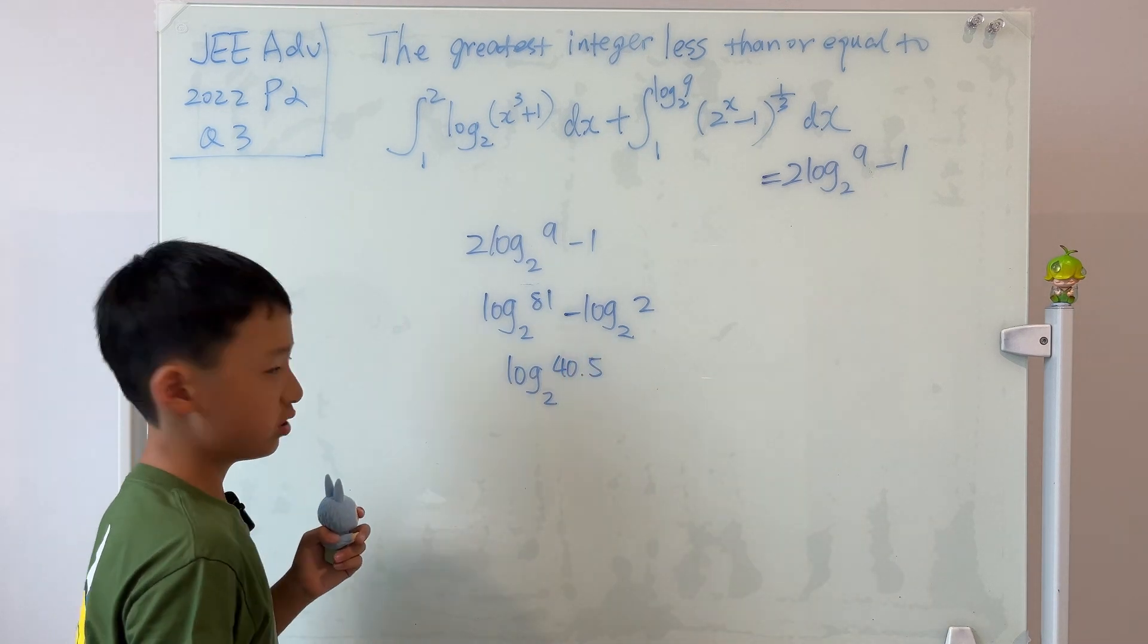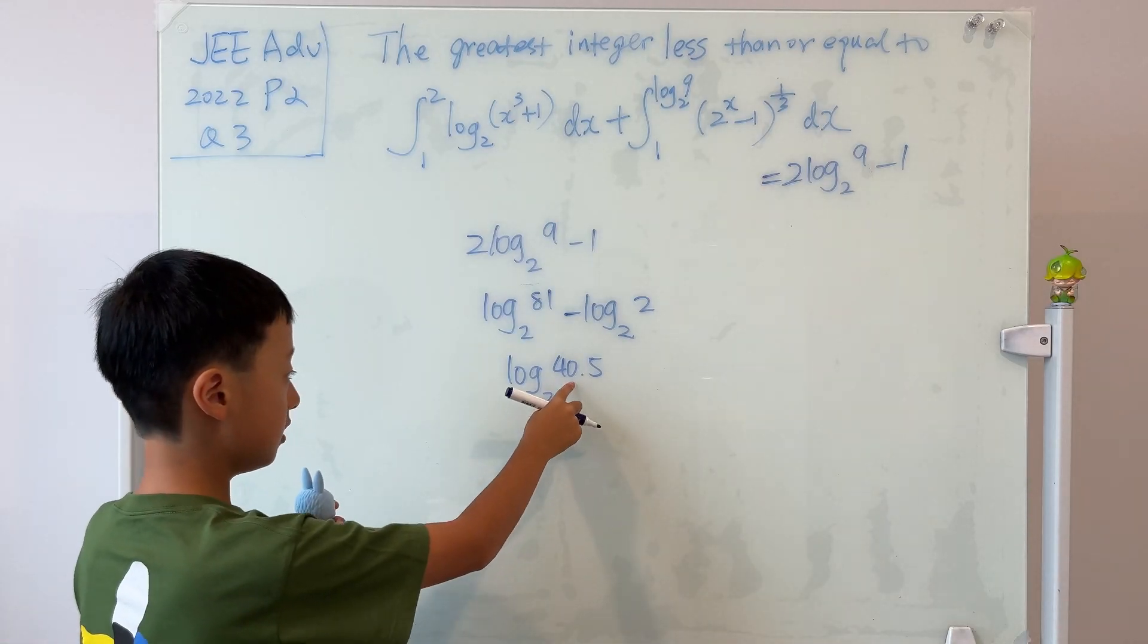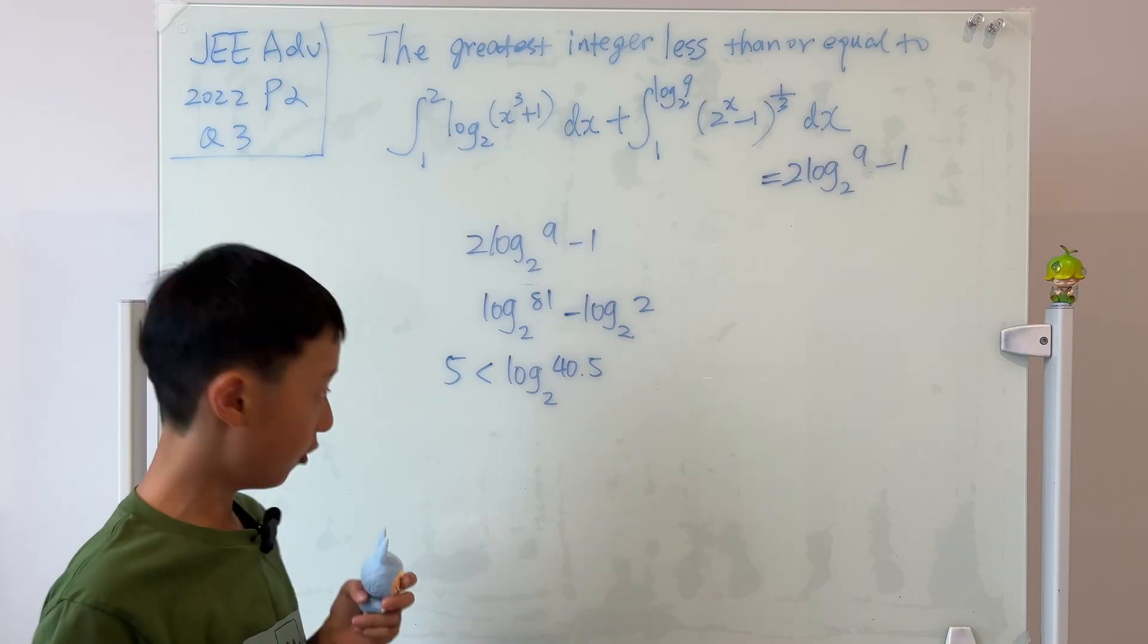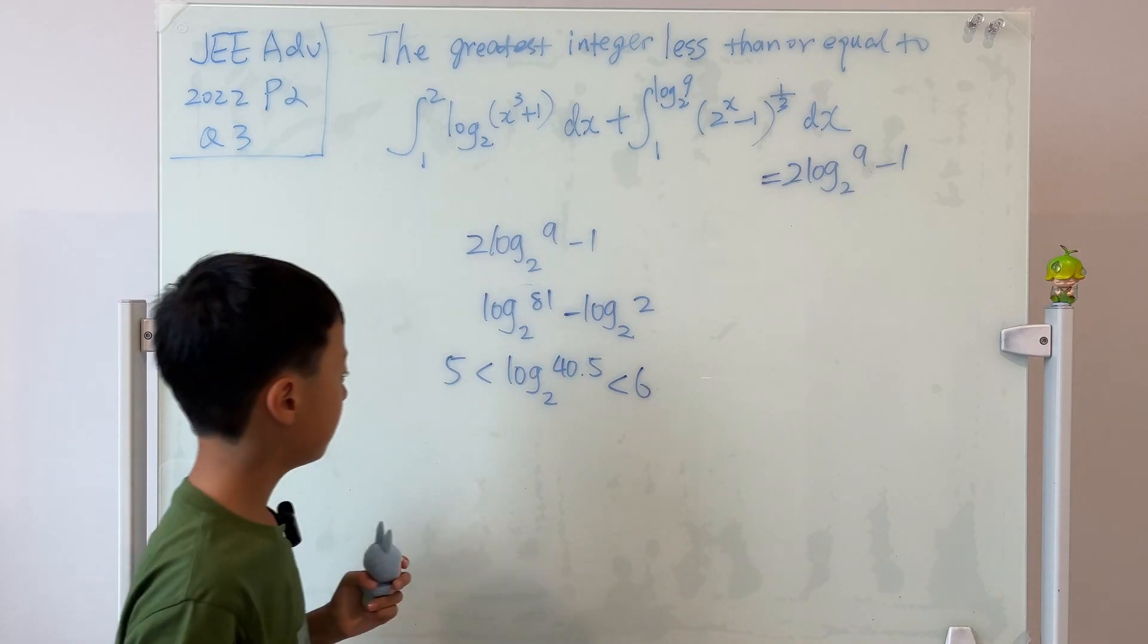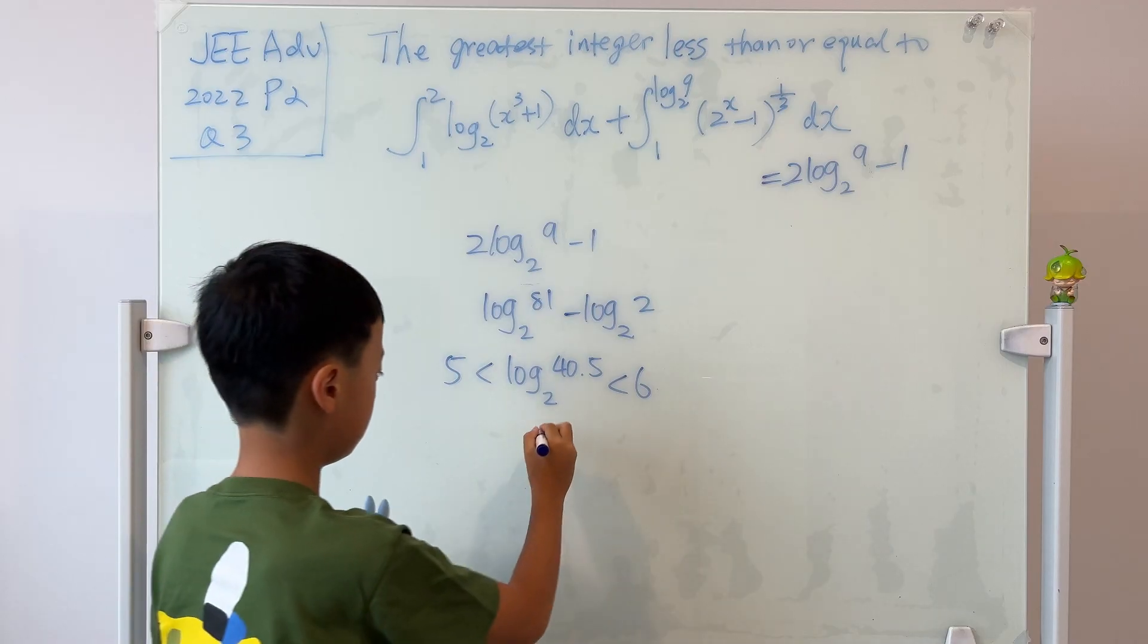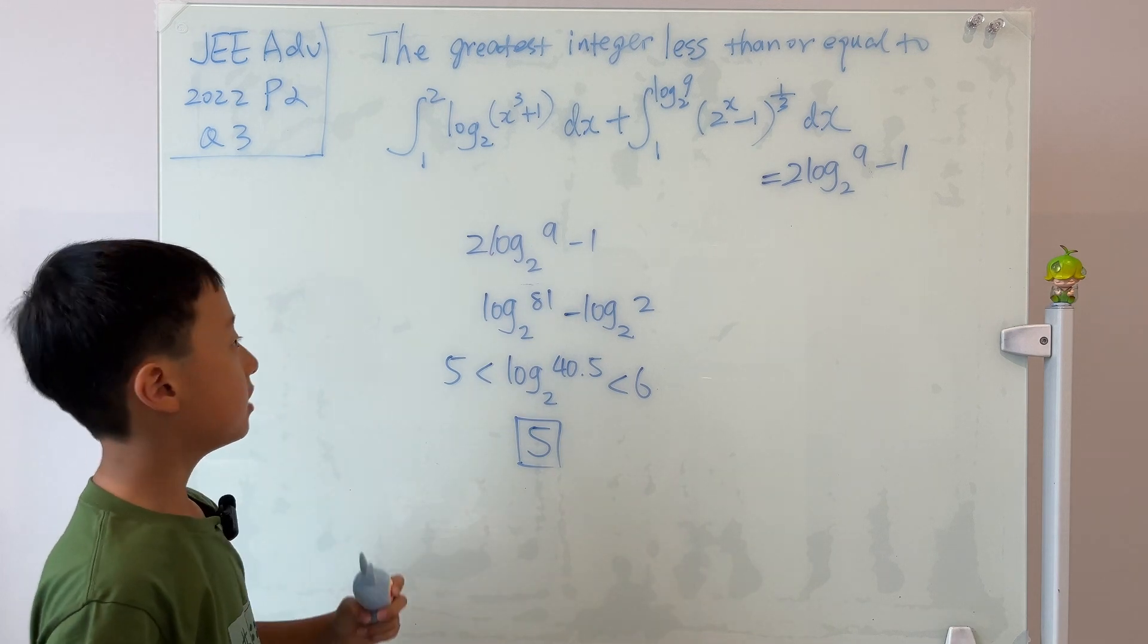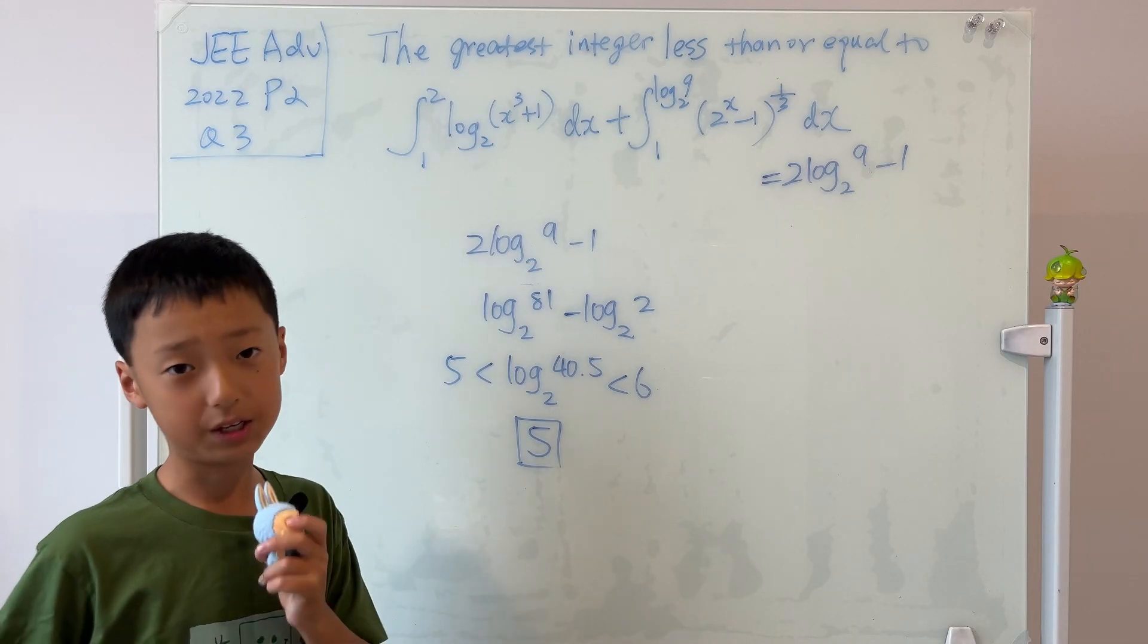Let's raise 2 to the 5th power. 2 to the 5th power is 32, which is less than this. So then this has to be greater than 5, correct? And if we raise this to the 6th power, then it's 64. And 64 is greater than this, so this has to be smaller than 6, right? But it says less than or equal to this, so 5. This is the final answer of, I think, what to be the most cool questions that I've ever done in my life.